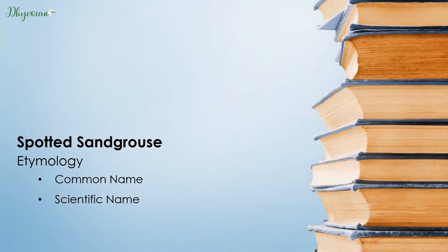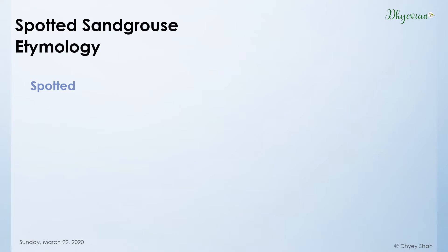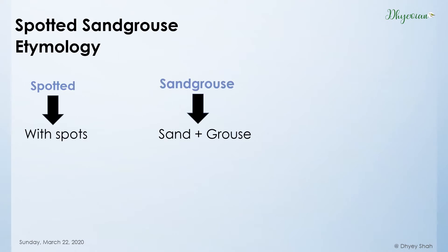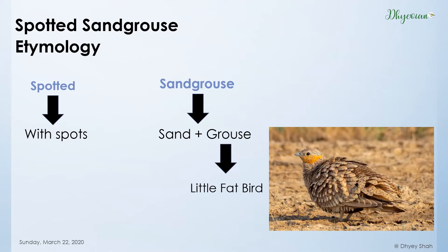Moving on to etymology, in which we will discuss its scientific and common name. As the name suggests, it is 'spotted' — which means with spots. 'Sand grouse,' in which 'grouse' means a fat and little bird — so, a little bird which lives in sand. You can see that it has spots all over its body.